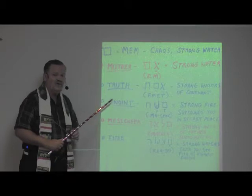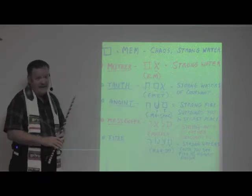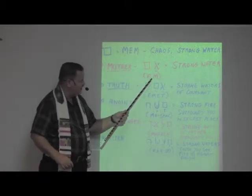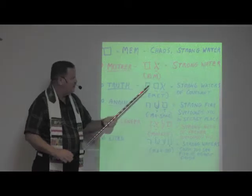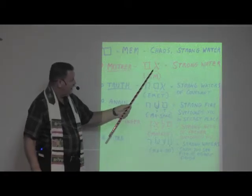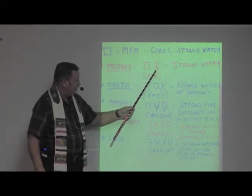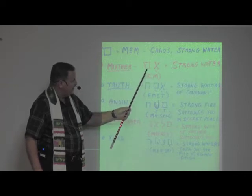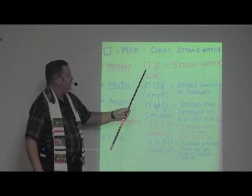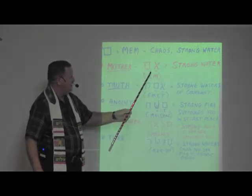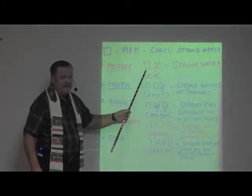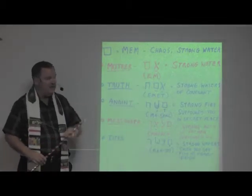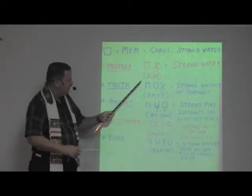We're going to start with the word mother. The word mother is made up of two letters, and the way you pronounce it is EM. You have the aleph — these two dots are the E — and then the MEM here has the M sound. The aleph has no sound of its own; it has to have a vowel with it. So it's EM.